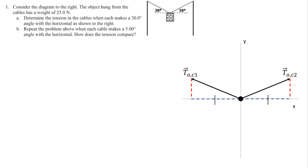I'll start with tension 2 — tension on the object from cable 2 — and draw the x and y coordinate vectors. The x component vector balances out the other tension. This would be tension on the object from cable 1. The two dashed red lines, the y components of both tensions, add together to balance out the weight. Then we write our two equations: T1y plus T2y equals the weight, and T1x equals T2x.